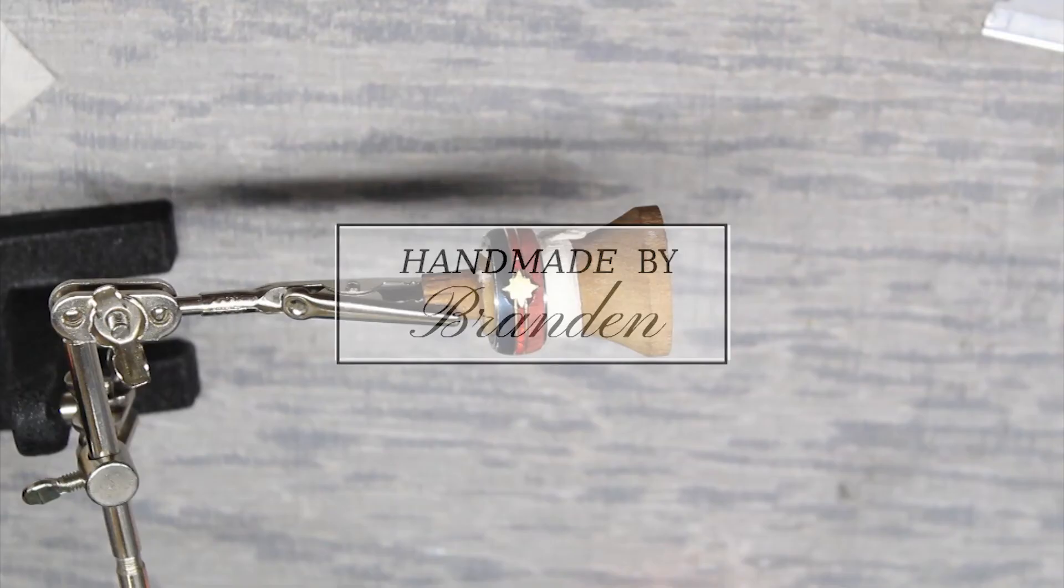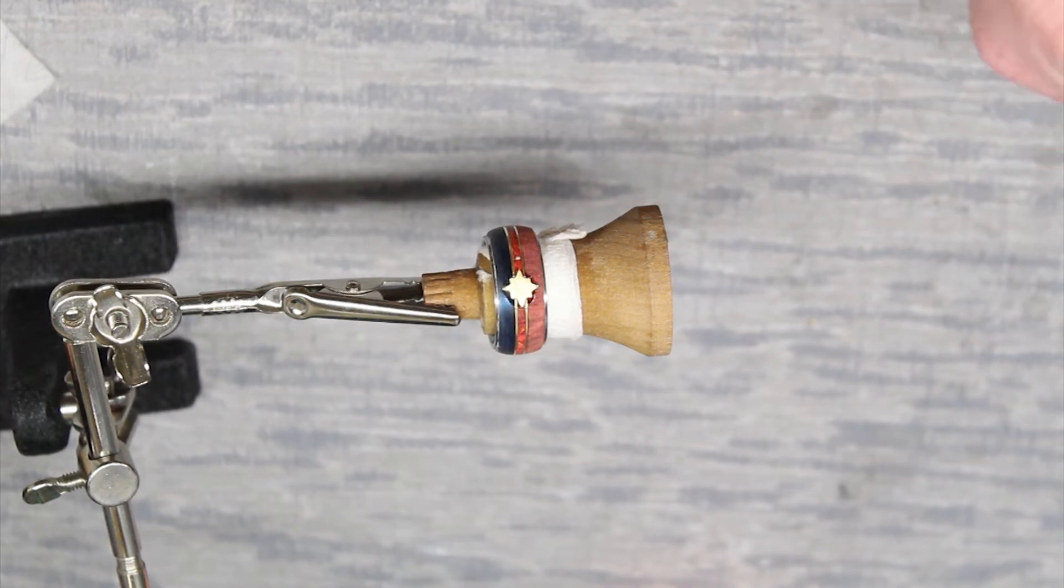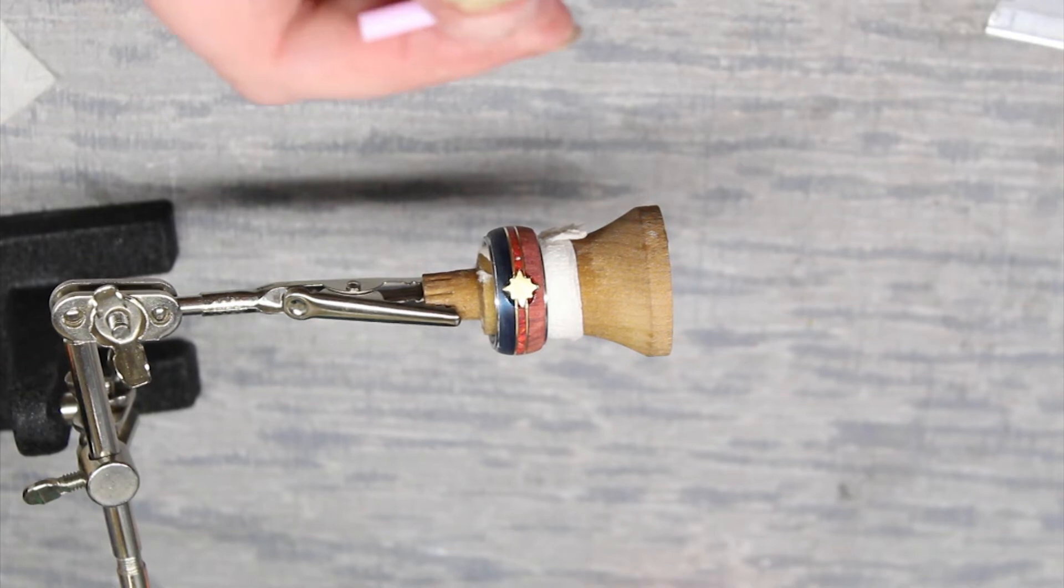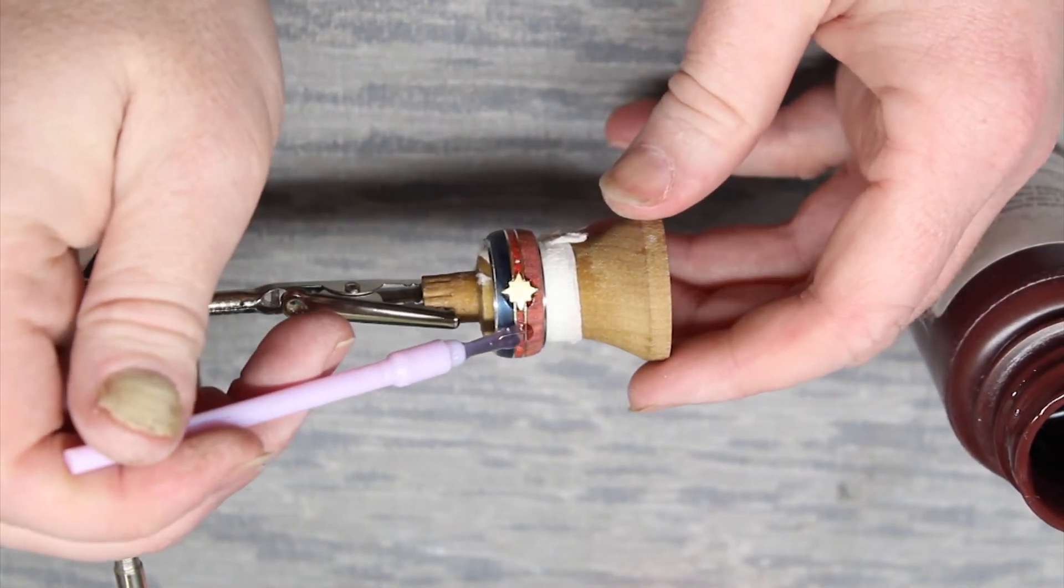All right, today I'm going to be applying an Illumi UV finish to this ring. I started off on a stand just to keep things a little steadier for you. I usually don't do this on a stand; I just hand hold the little mandrel that I made there.